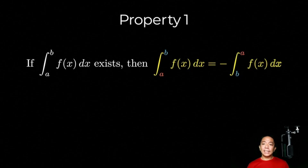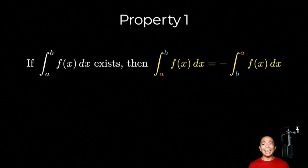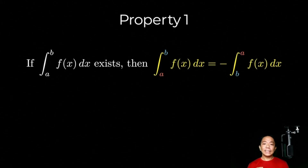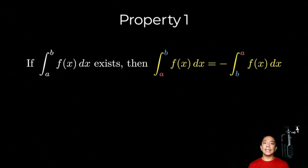The first property states that if the definite integral from a to b of f of x exists, then the definite integral from a to b of f of x is equal to the negative of the definite integral from b to a of f of x. So sinasabi niya, pag sinwitch ko yung a and b, yung limits of integration, magiging negative yung value ng definite integral.